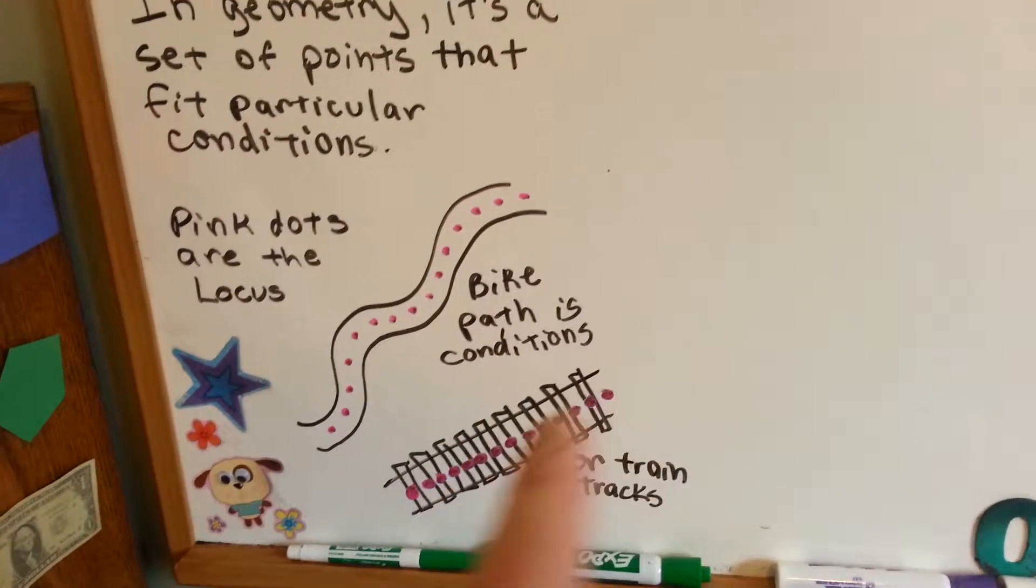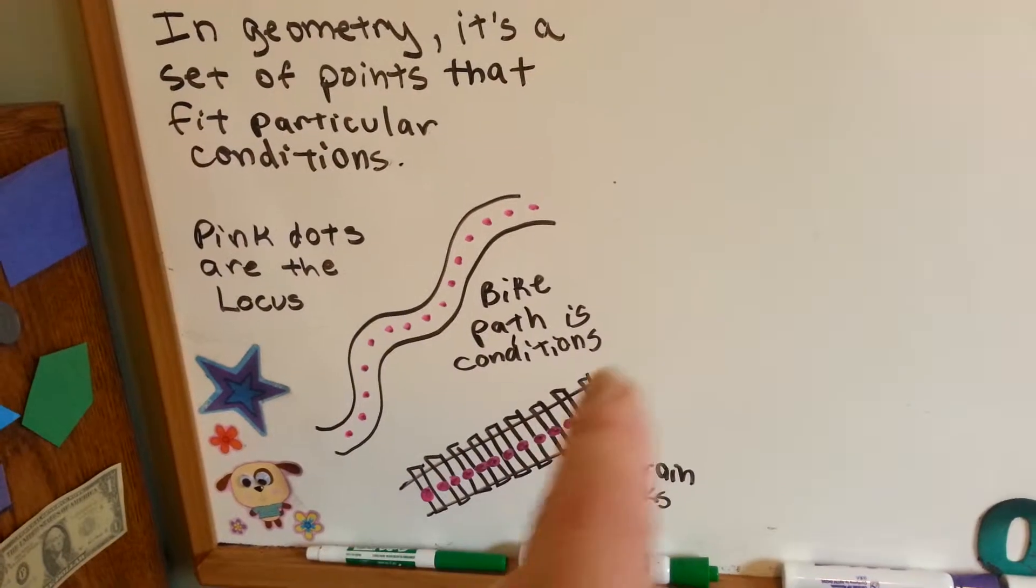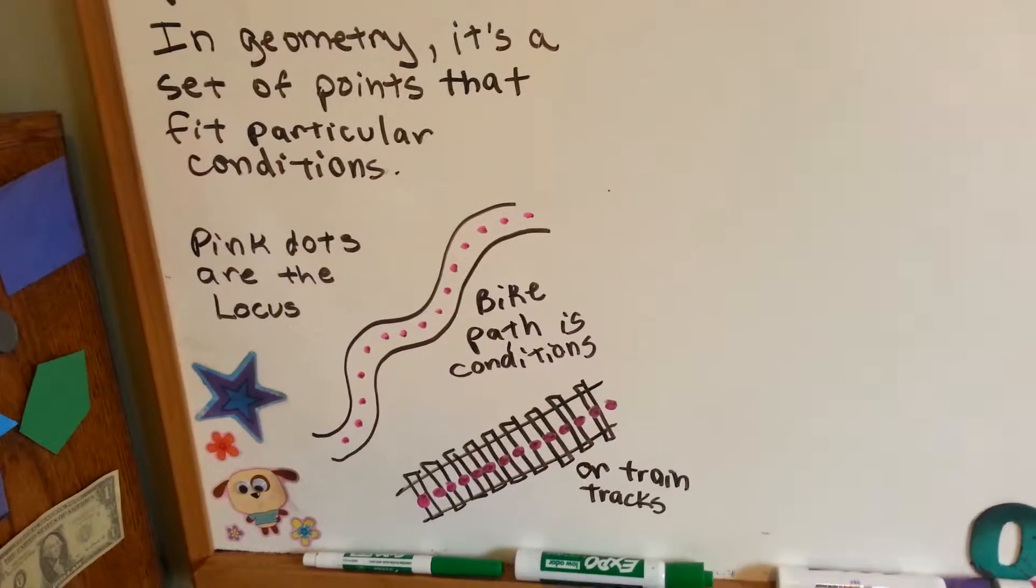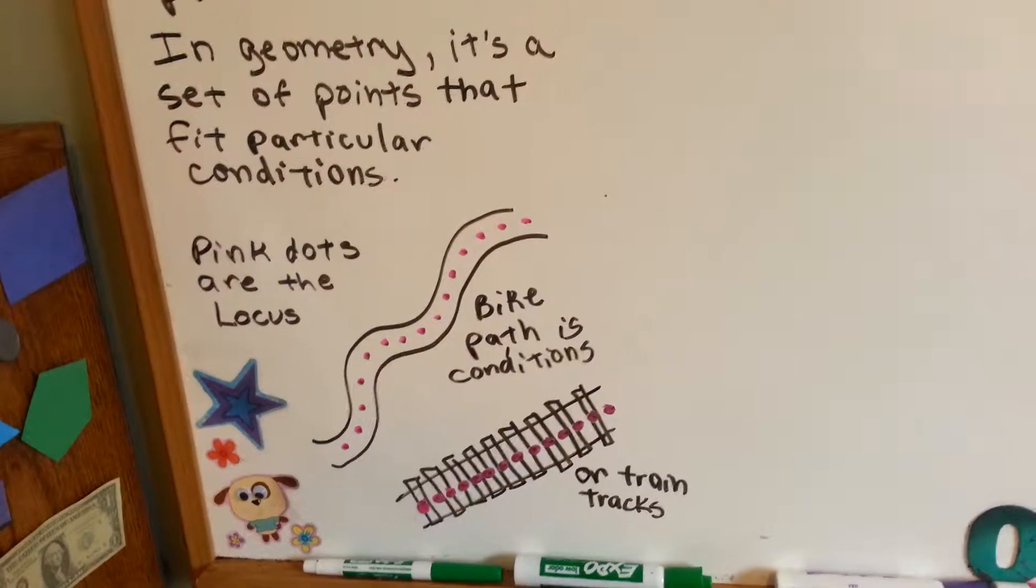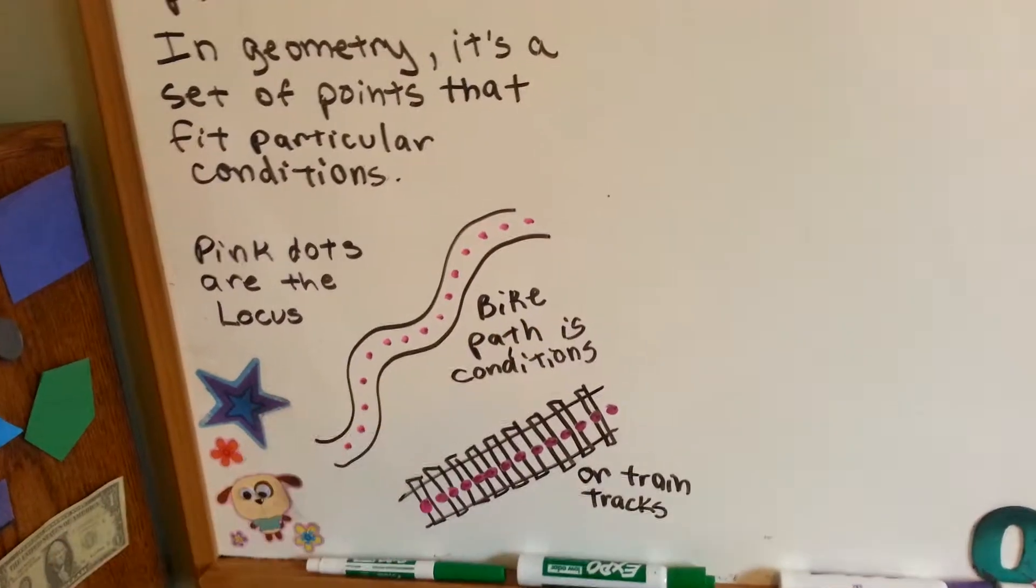Or train tracks. The train wheels are so designed that they have to stay on the tracks. If the points were here, then that would be the locus points, see? And the conditions would be that they're stuck on the track.